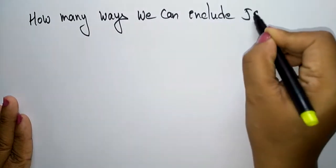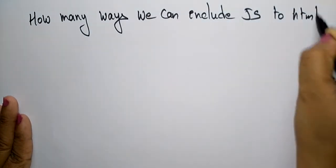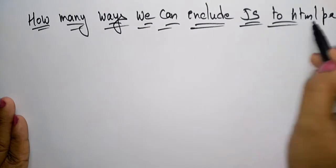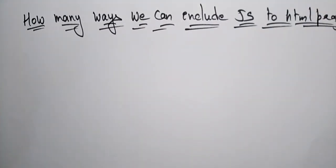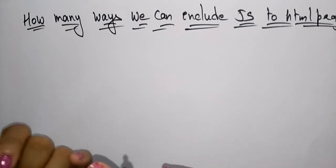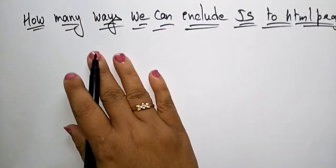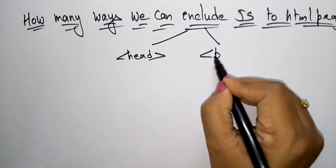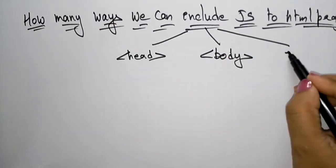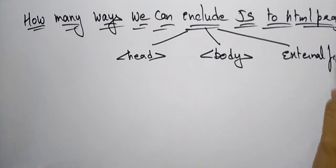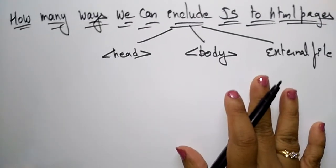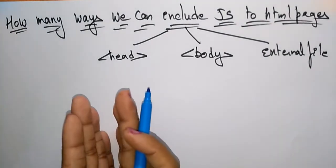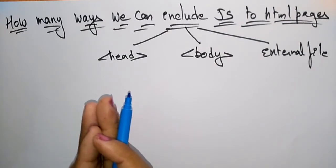JavaScript can be written in HTML pages in any of the sections — you can include it in the head section, or you can include it in the body section, or you can write it in an external file. So these are the three different ways you can include JavaScript in HTML pages.